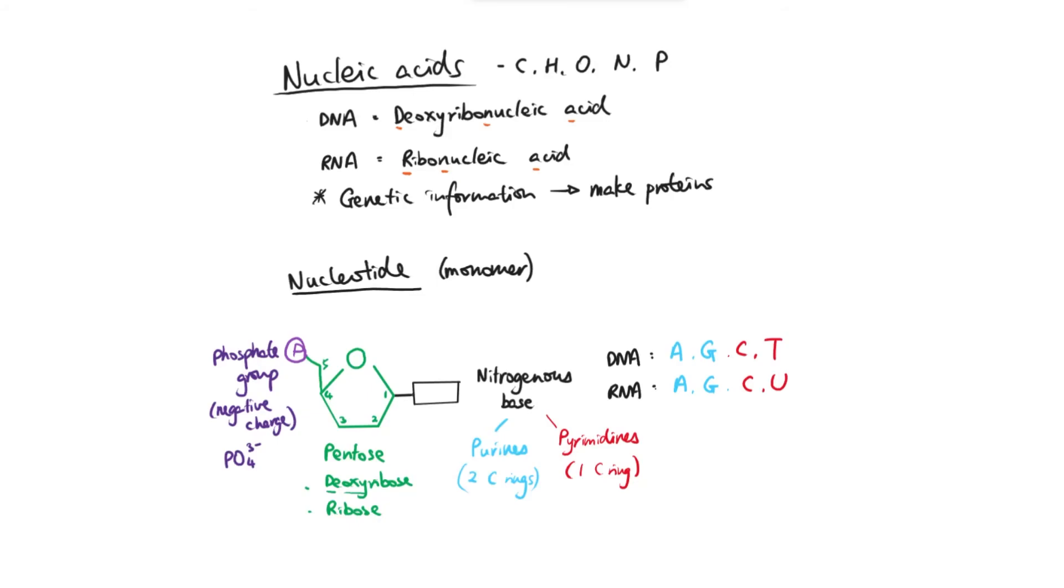So just to quickly summarize, nucleic acids are a group of biological molecules that carry our genetic information and basically code the instructions on how to make proteins. They're made up of five particular elements: carbon, hydrogen, oxygen, nitrogen, and phosphorus.